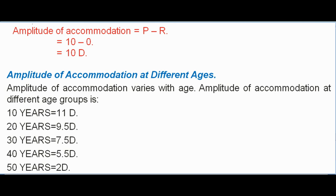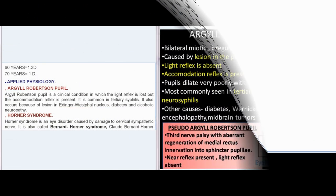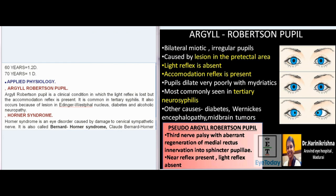Amplitude of accommodation varies with age. The values at different age groups are: 10 years = 11 D; 20 years = 9.5 D; 30 years = 7.5 D; 40 years = 5.5 D; 50 years = 2 D; 60 years = 1.2 D; 70 years = 1 D.